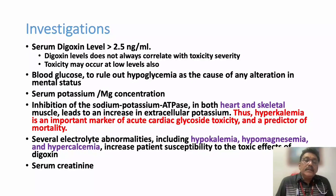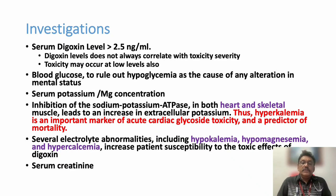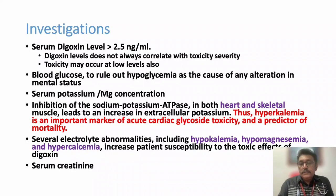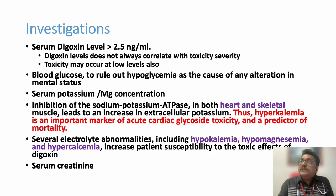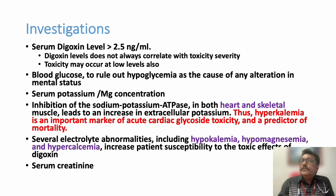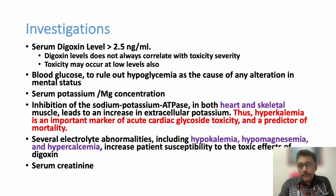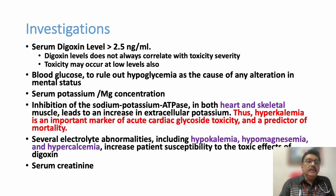Both hyperkalemia and hypokalemia can occur in Digoxin toxicity. Hypermagnesemia and hyperkalemia are also commonly seen. All patients with Digoxin toxicity must have creatinine checked, because Digoxin toxicity is very common in patients with renal failure without dose adjustment. If creatinine is elevated and the dose was not adjusted, the patient can progress to Digoxin toxicity. A Digoxin level greater than 2.5 nanogram per mL can produce toxic features.